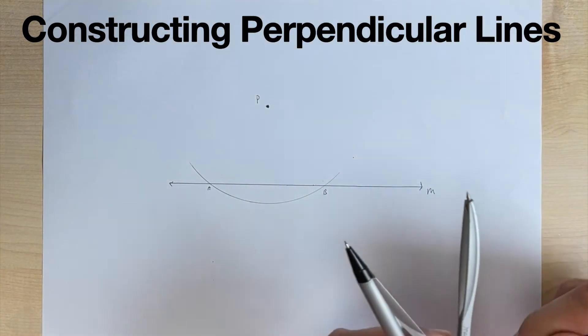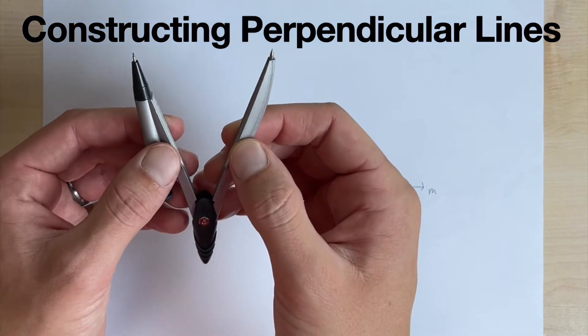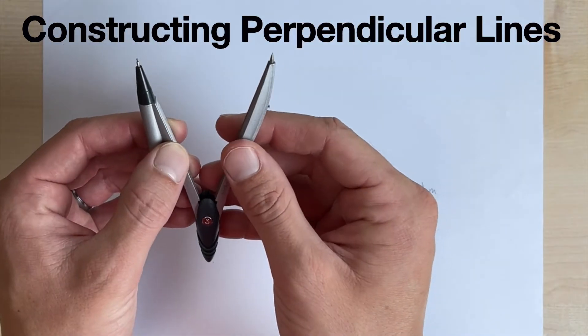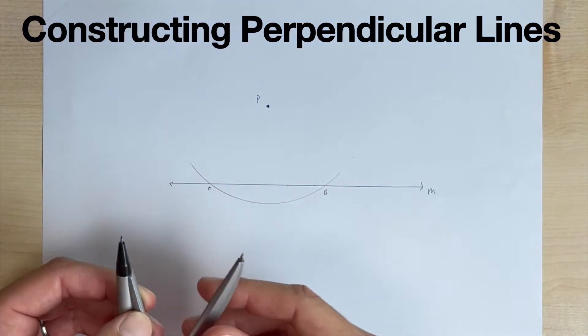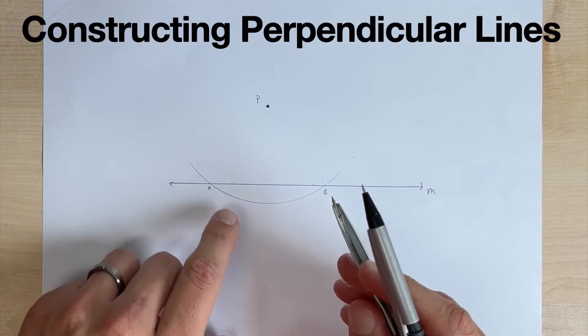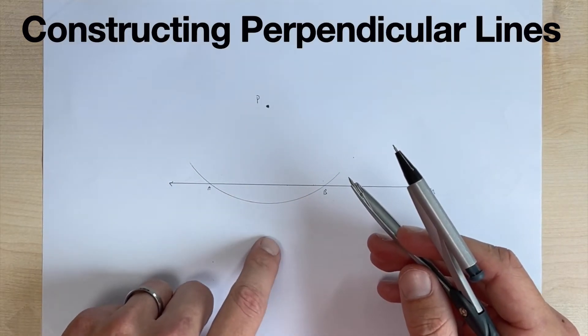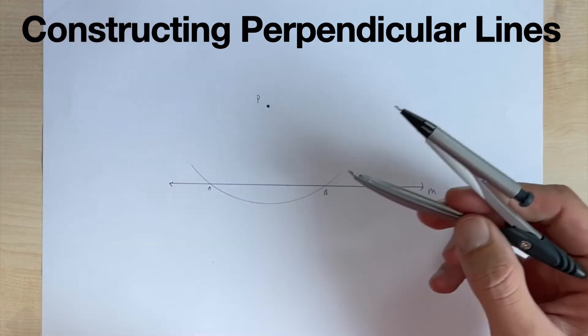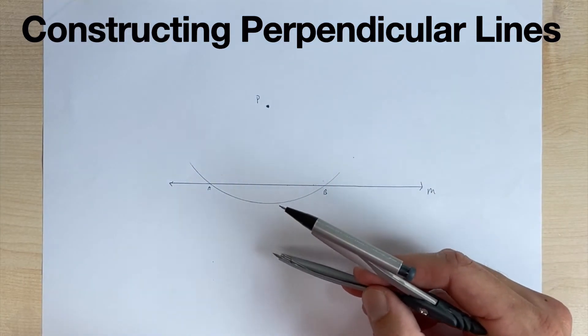All right. So now what we're going to do, it doesn't matter how your compass is at this point. If you want to close it up a little bit, that's fine. But what we're going to do is put the needle at A and make an arc down here. And then we'll keep the compass open the same amount, put the needle at B, and make another arc down here as well.